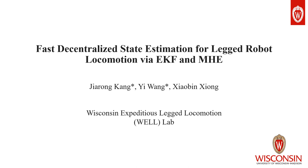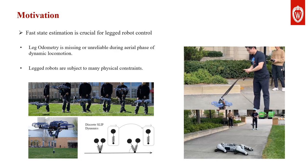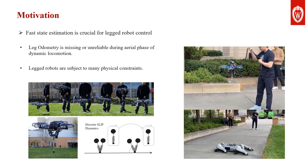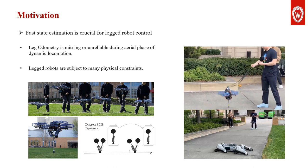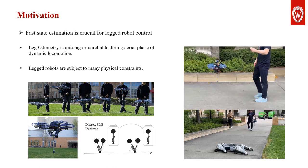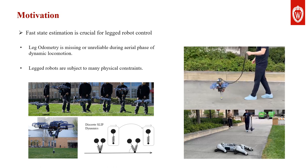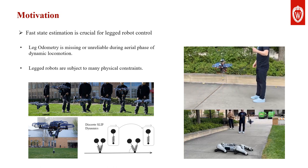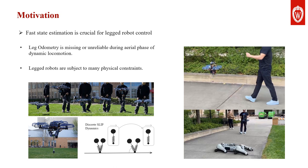In this paper, we present a novel estimation framework for legged robotic systems. Our main objective is to provide fast, decentralized state estimation for the control of legged robots. Due to the inherently under-actuated nature of legged robots, fast state estimation of the torso velocity and orientation is crucial for legged robot control.